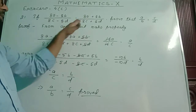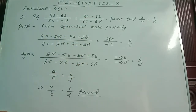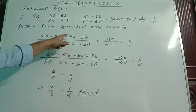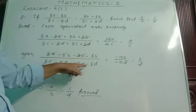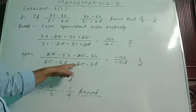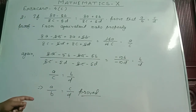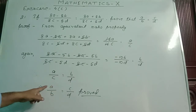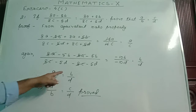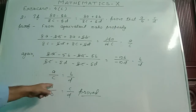Secondly, I have subtracted numerator and denominator. So I wrote 8a minus 5b minus 8a plus 5b, and similarly 8c minus 5d minus 8c plus 5d. After subtracting, 8a minus 8a and 8c minus 8c cancel. We have minus 10b by minus 10d, and minus 10 and minus 10 cancel, giving b by d. Now, in this way a by c equals b by d, and we can rewrite this as a by b equals c by d. By cross multiplication or from the property of proportion, a by b equals c by d. Proved.